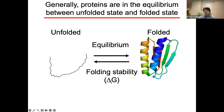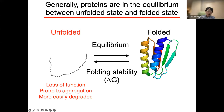The folding stability represents the defined equilibrium between unfolded and folded state. Folding stability is a very important feature for the function or properties of proteins. Because if one protein is in the unfolded state, it should lose its proper function, and it is prone to aggregation or easily degraded inside cells. So understanding folding stability is very important.